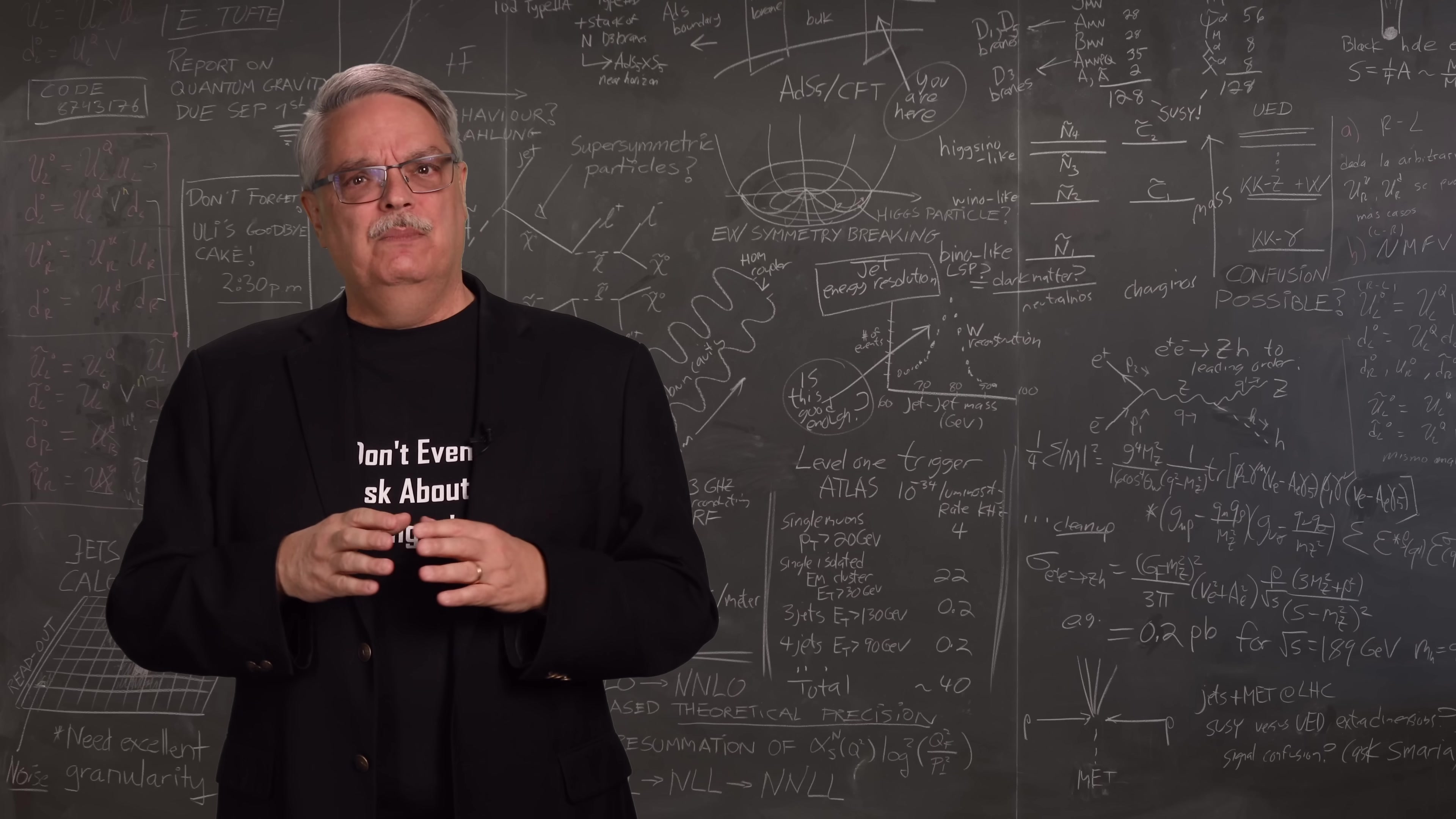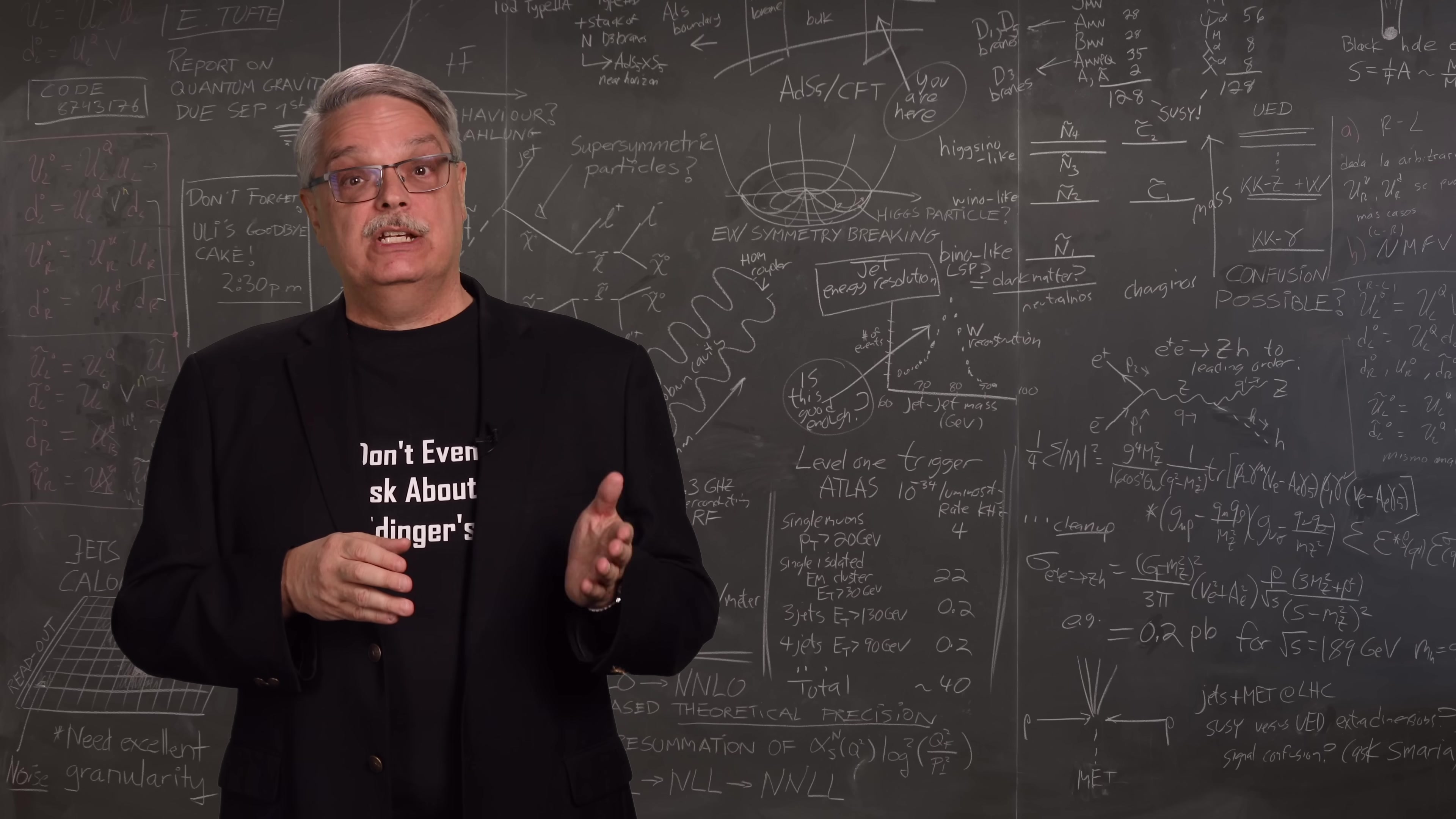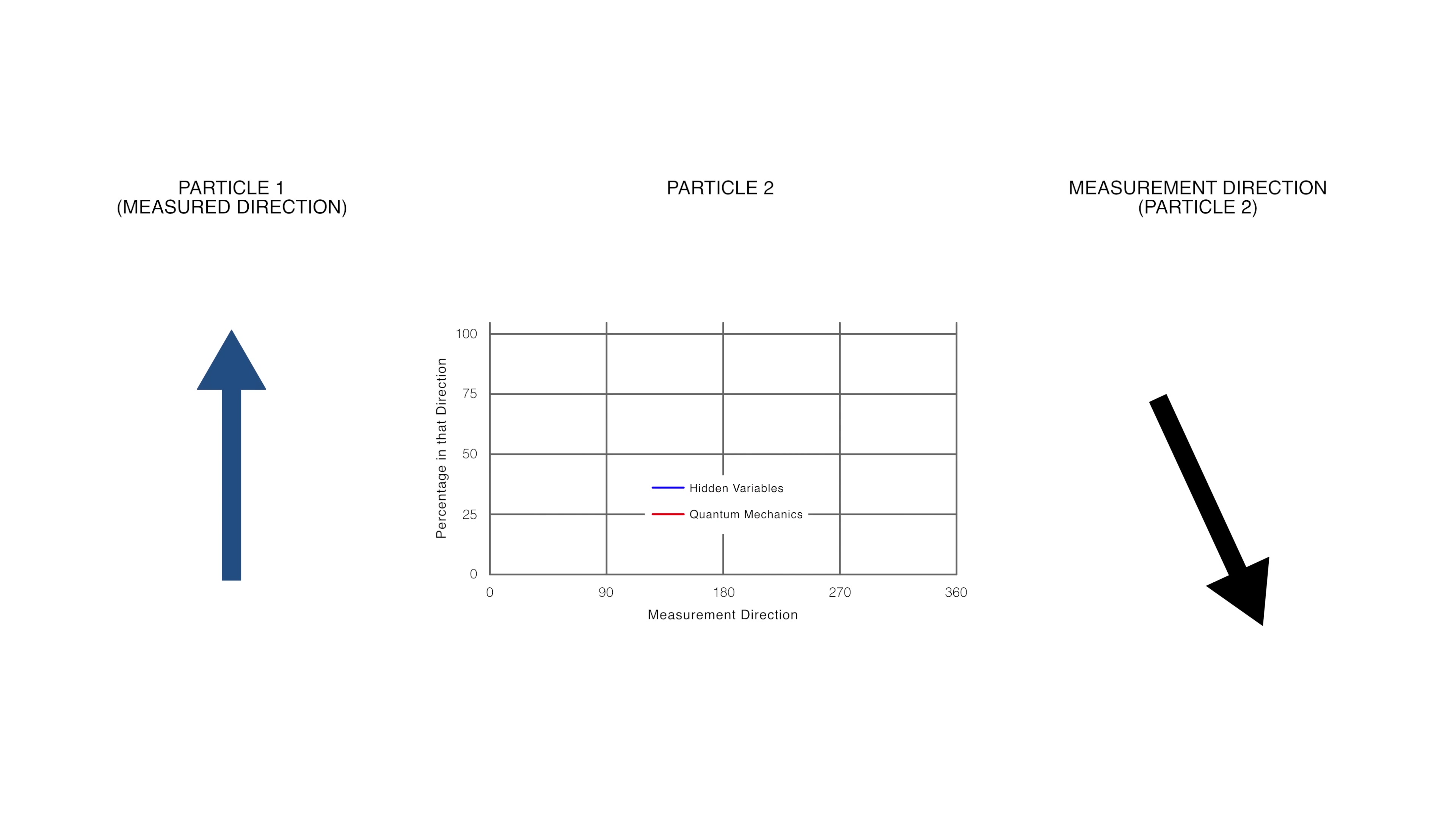So now we're ready for the final bit, which is to look at all possible measurement directions for the second particle and see if the predictions are different for quantum mechanics and hidden variables. We will still assume that the spin direction measurement for the first particle is upward, and then measure the spin direction for the second particle starting upward and then slowly spinning the measurement through 360 degrees. This graph shows the predictions of how often the second measurement will be in the direction the second arrow is pointing. If the second arrow is pointing upward, we know that the second measurement is always downward, so that means the second measurement agrees zero percent of the time.